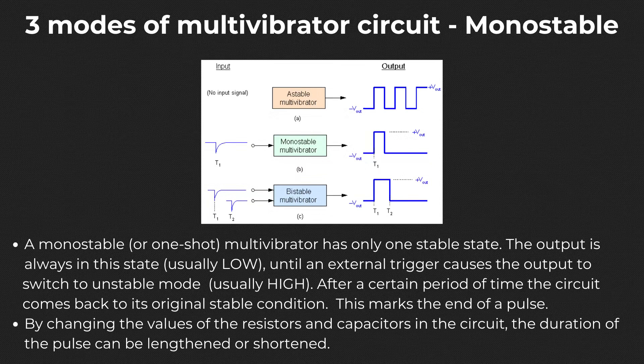A monostable multivibrator, also called a one-shot multivibrator, is a circuit that responds to an external trigger by producing a single pulse with a set duration. A pulse from outside causes this type of multivibrator to flip from its stable state to an unstable one. The circuit returns to its stable condition after a certain amount of time and generates a single output pulse. Its applications include pulse shaping, debouncing, and time delay functions.